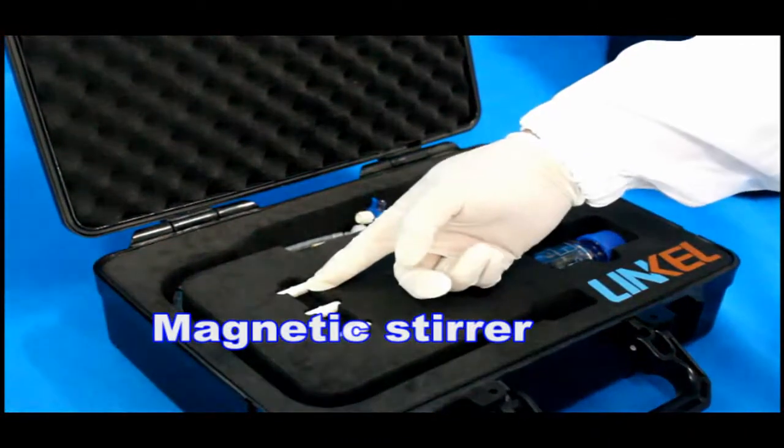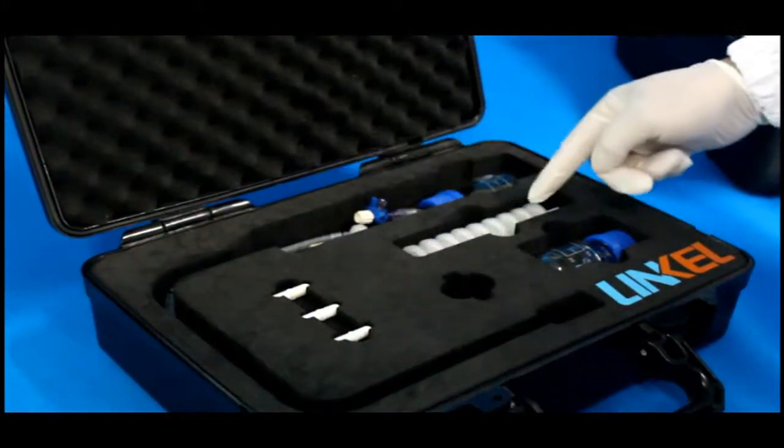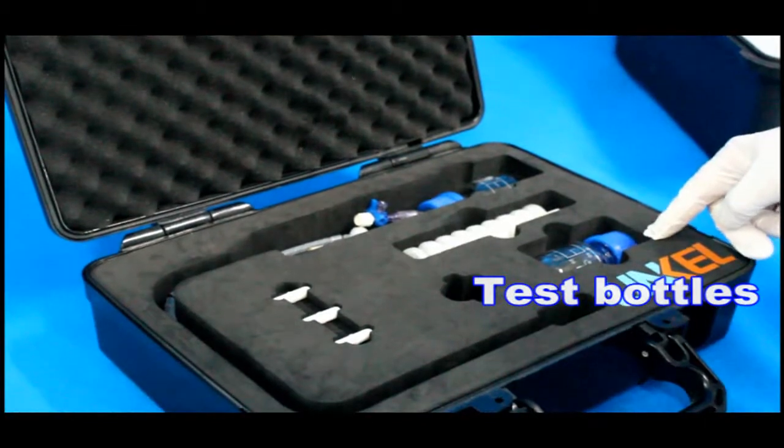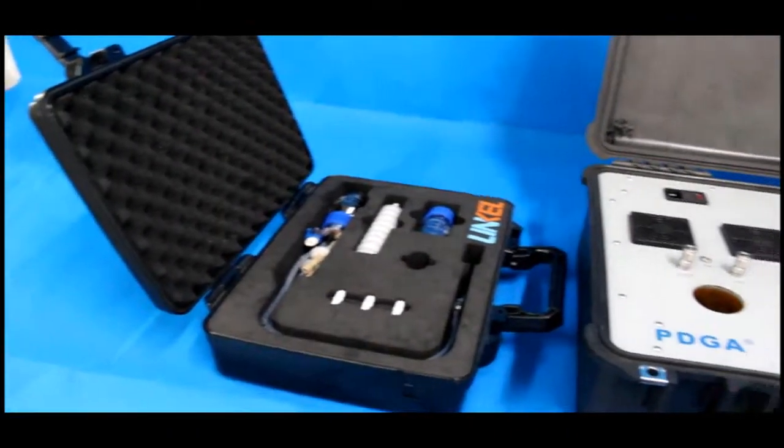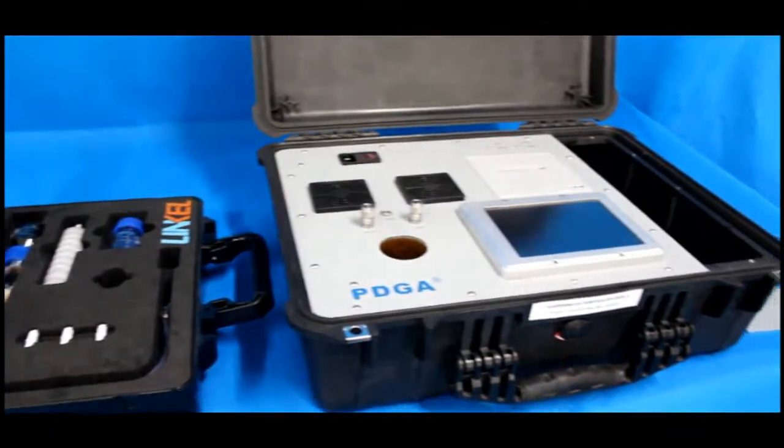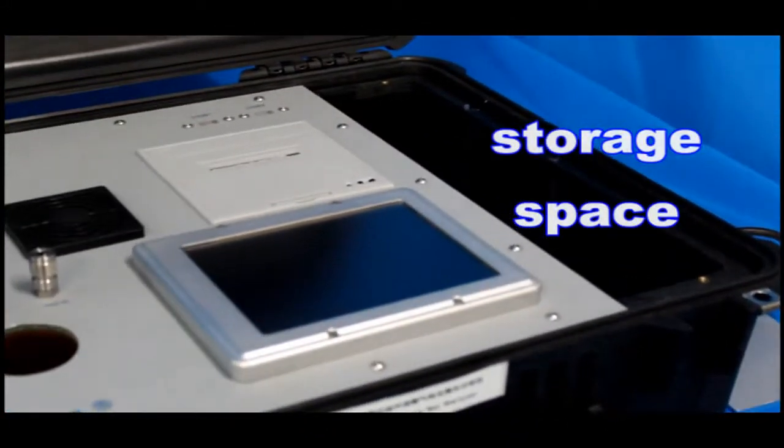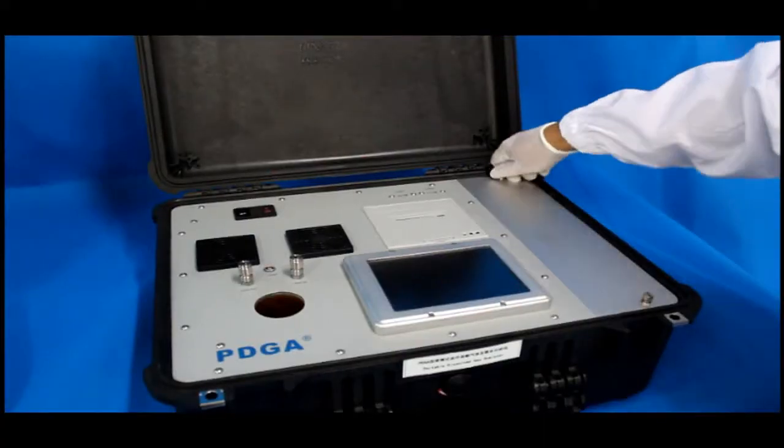And we have three magnetic stir as backup. Normally, 10 of Teflon filter will be enough for you to run tests for more than two years. All the accessories can be stored in the storage space of PDGA kit. We will show that at the end of this video.